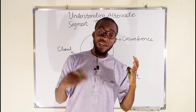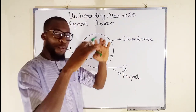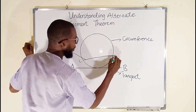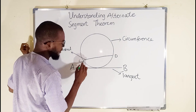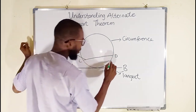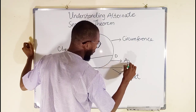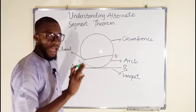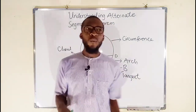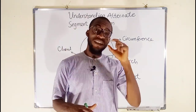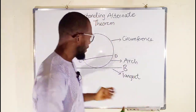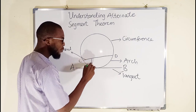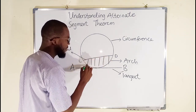We also need to define an arc. An arc is any portion of the circumference. So from this point — let me call this C and this D — from C to D, this curve right here is an arc. Also, C to D in the other direction is also an arc. A segment is the area bounded by the chord and the arc, so we have arc CD and chord CD, and this portion right here is a segment.